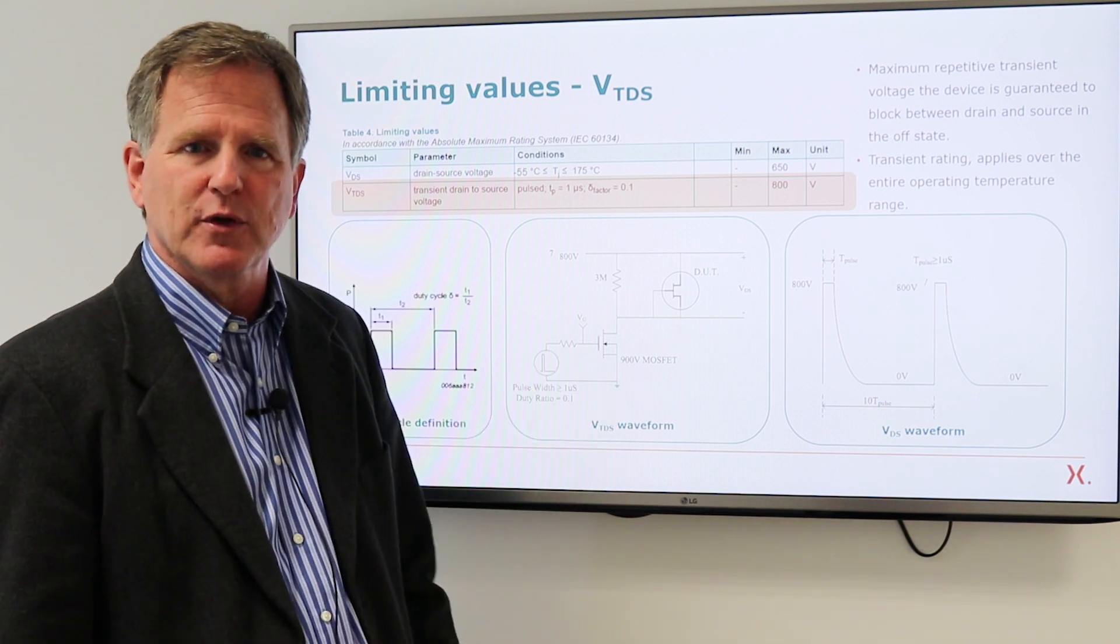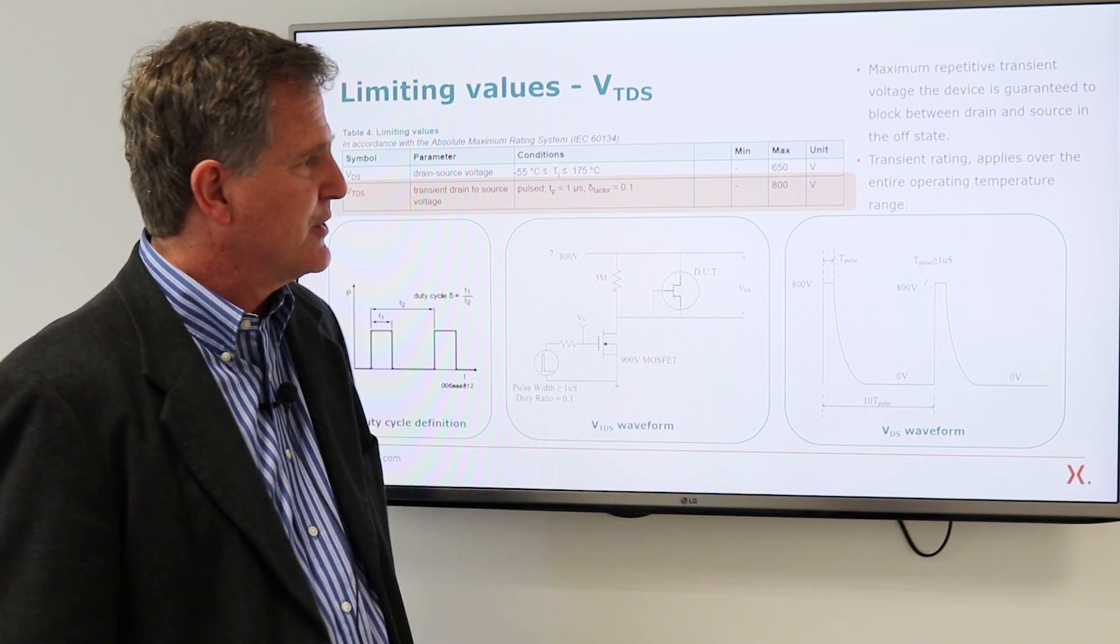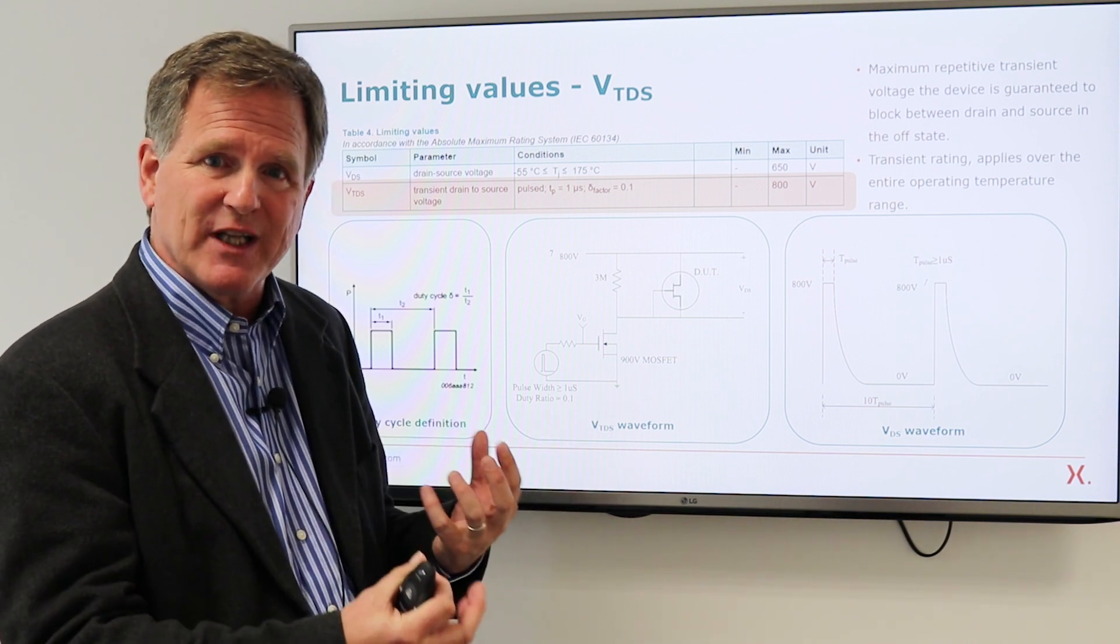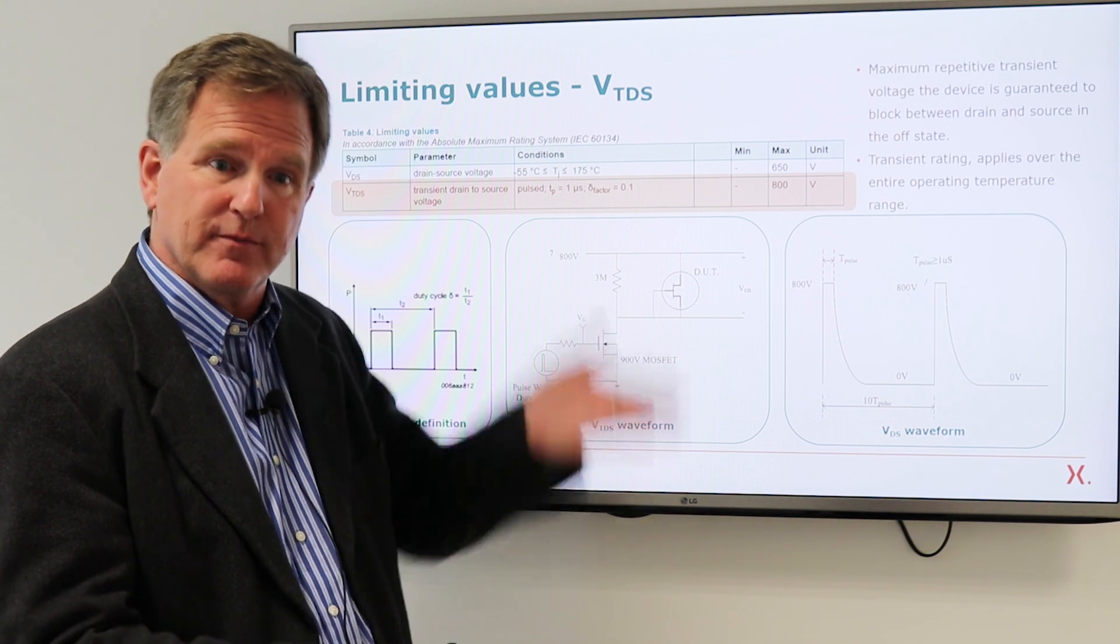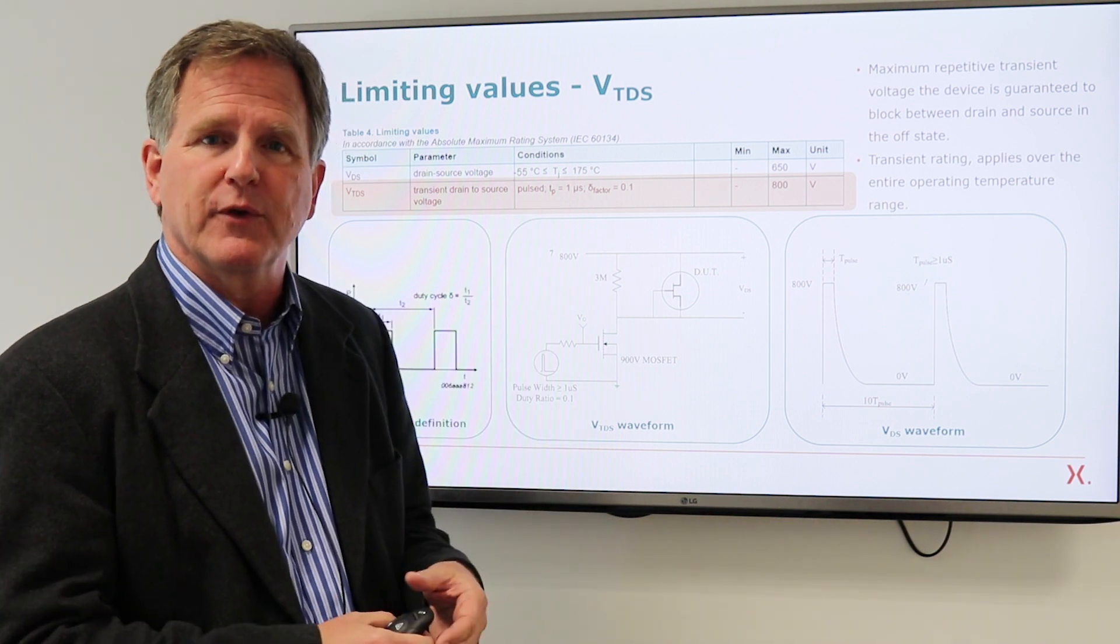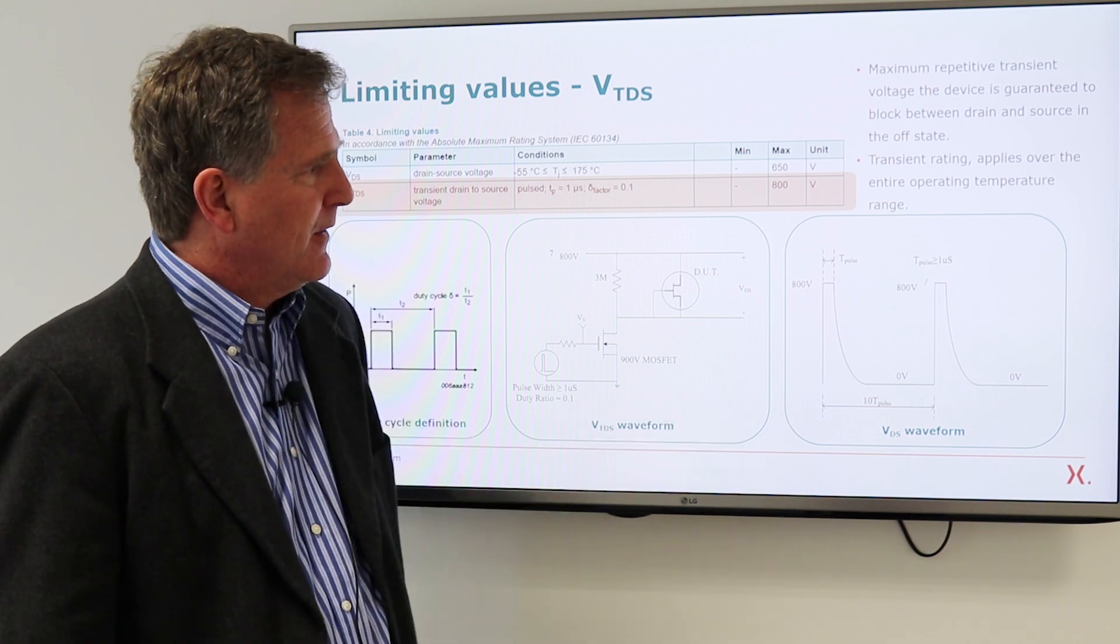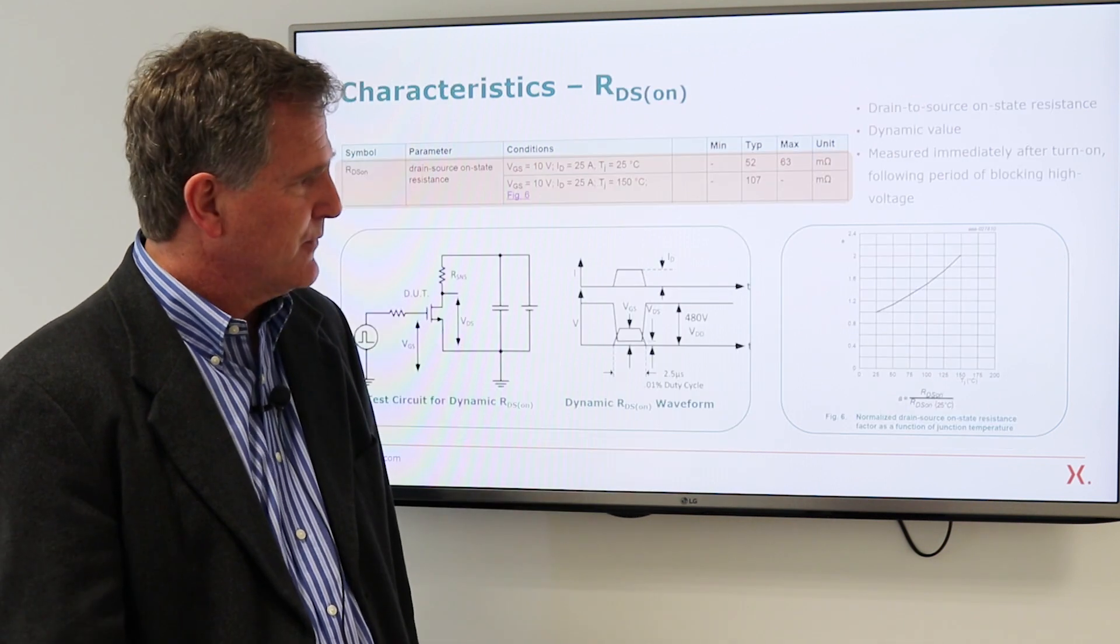that is an acceptable amount of over voltage. And keep in mind there is no clamping, so there's no question of avalanche energy. It's just a transient, more you can think the energy is reflected off of the device. Okay, transient drain source voltage.